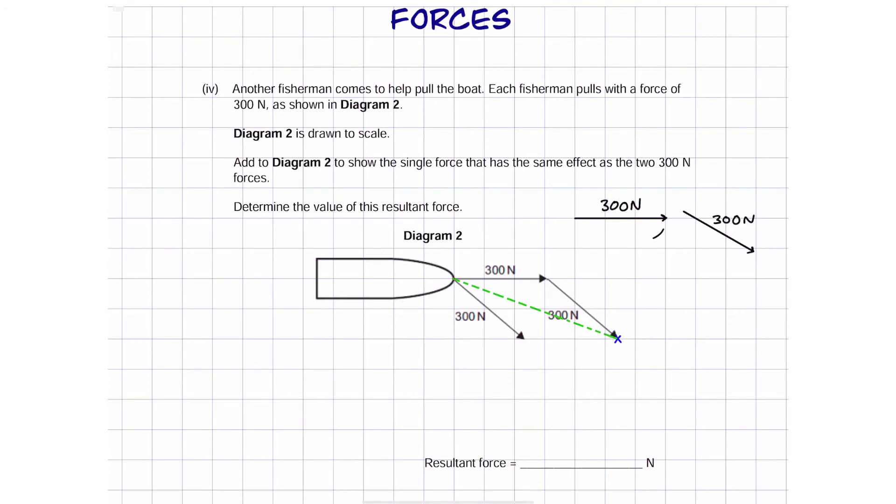Now how much is that as a value? So if we said that this 300 Newton line is worth 3 centimeters, so that means it's equal to 100 Newtons per centimeter.